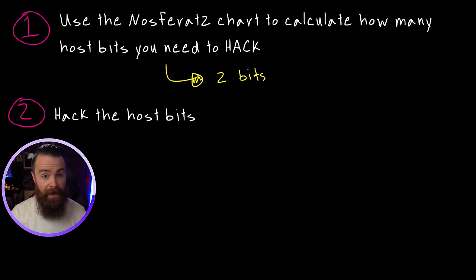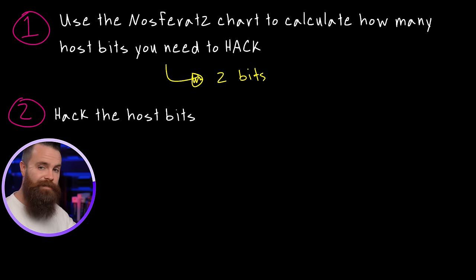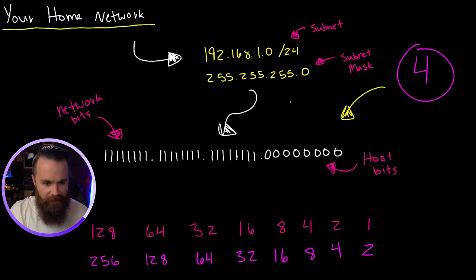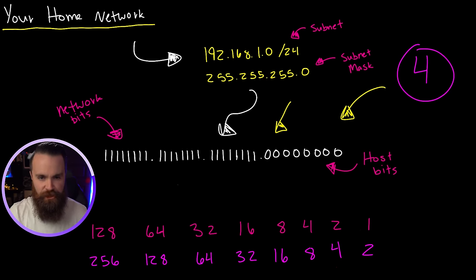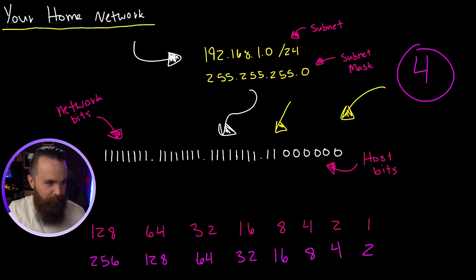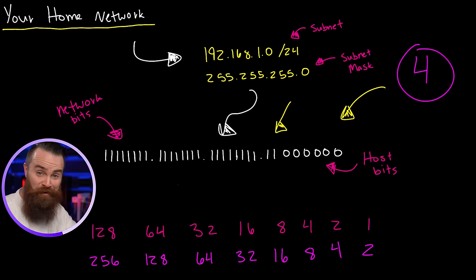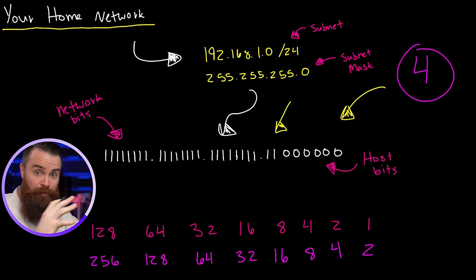Now that we know how many bits we need to hack, let's go ahead and hack them — flip them, bring them over to the dark side. Starting at the beginning of our host bits, we'll hack two bits — hacked, hacked — and flip them over to the dark side. And that right there is our new subnet mask. You just subnetted a network from one network into four networks.